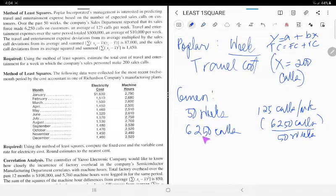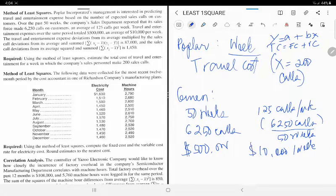What are the other given data? We have $500,000 in relation to 6,250 calls and we are given $10,000 per week. How do you get $10,000 per week? That is $500,000 divided by 50 weeks.